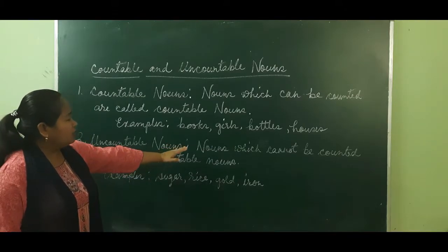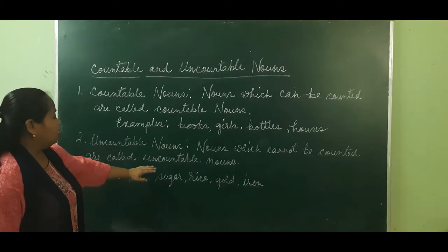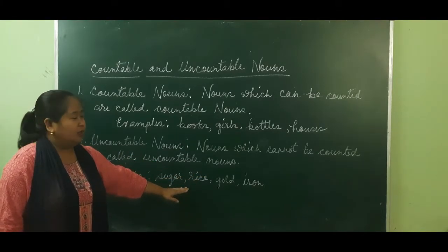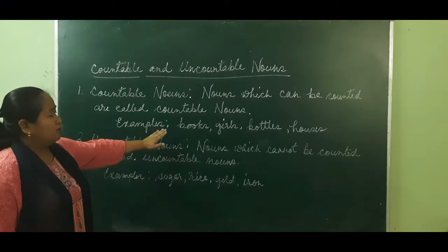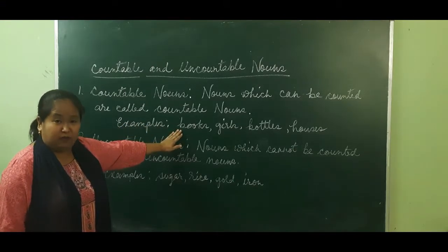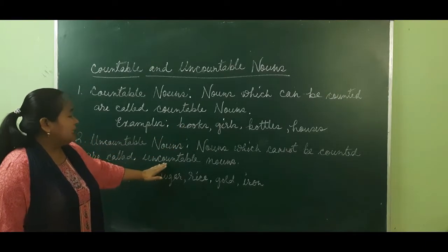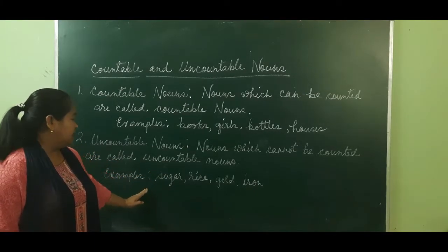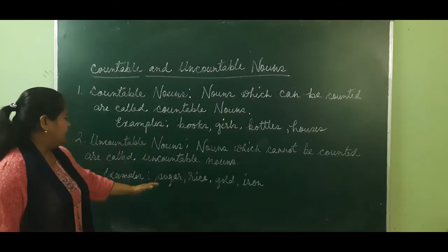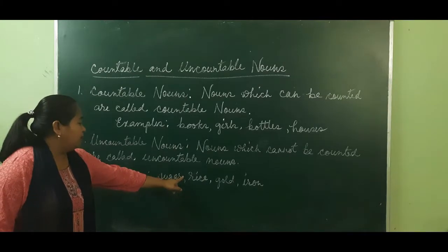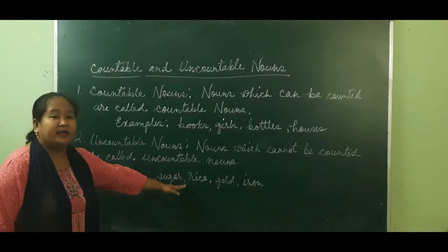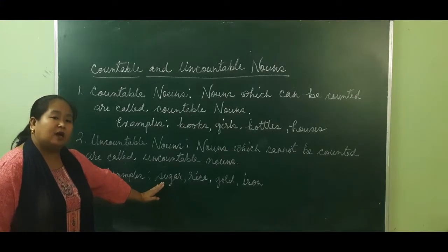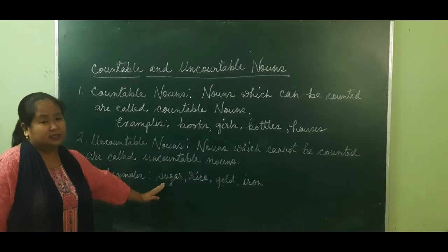Uncountable nouns are nouns which cannot be counted. For example: sugar, rice, gold, iron — these cannot be counted. Countable nouns can have both singular and plural forms — one book, two books. But uncountable nouns cannot have a plural form; they can only have a singular form. We say 'give me some sugar,' not 'give me some sugars' or 'give me some rices.' So uncountable nouns cannot have a plural form.